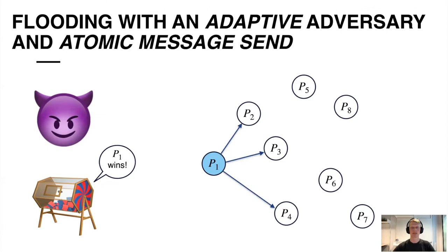If we instead consider atomic message sent, then the adversary does not have the possibility to corrupt the sender of the block and thereby retract the block. However, what the adversary can do is to corrupt the neighborhood of the sender and thereby prevent the delivery of the message to the remaining parties in the protocol. So again, this doesn't work.